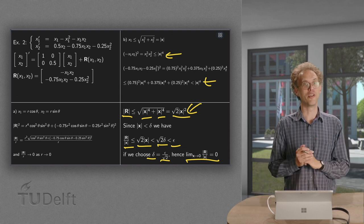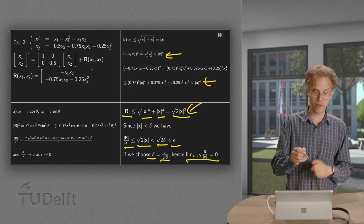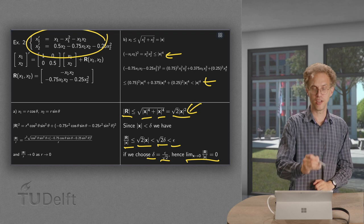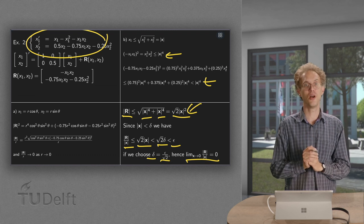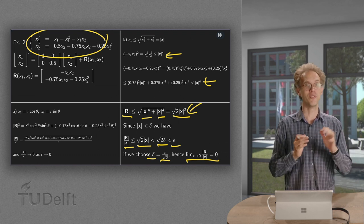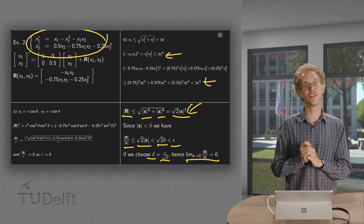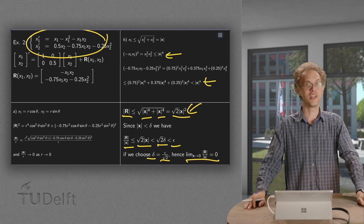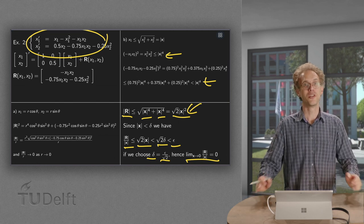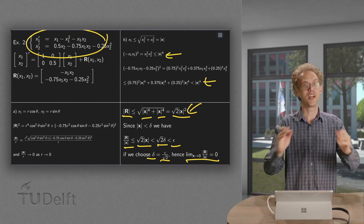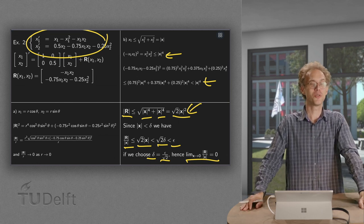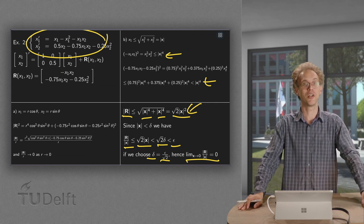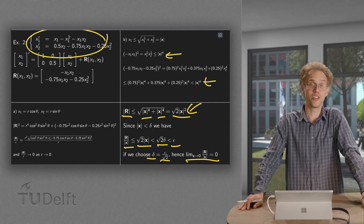So we have seen three methods which all show that this system is locally linear: an easy one using second derivatives, and harder ones using limits. For a quick check, I would recommend just taking partial derivatives and checking whether they are continuous or not.